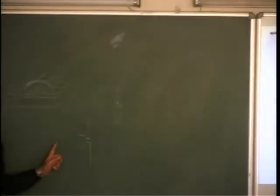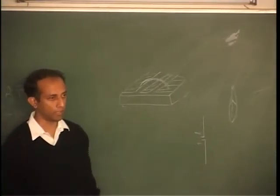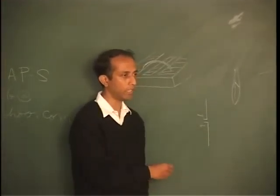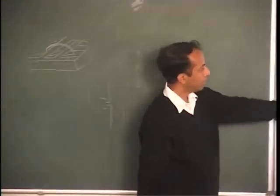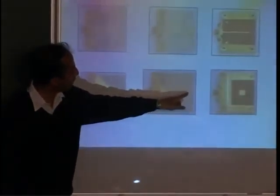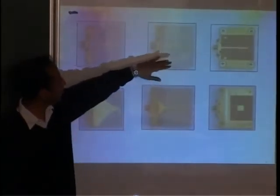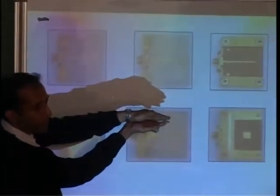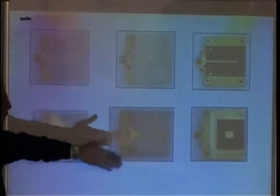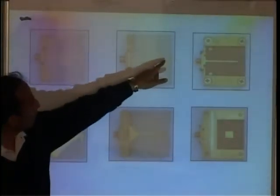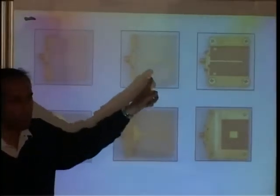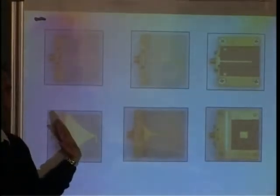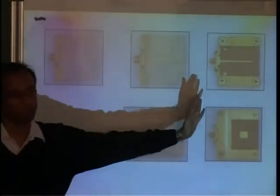Then there is a version of this dipole with parasitic reflectors and directors — called the Yagi antenna. You have other elements on either side of the main dipole element. You have a director on one side and a larger reflector on the other. Because of these, there is very little radiation in the back direction and the radiation is more concentrated in the front direction. So this is a printed Yagi antenna.